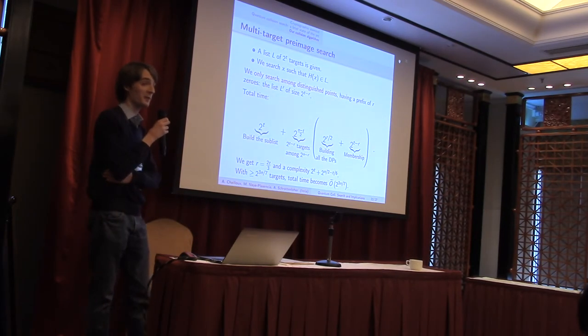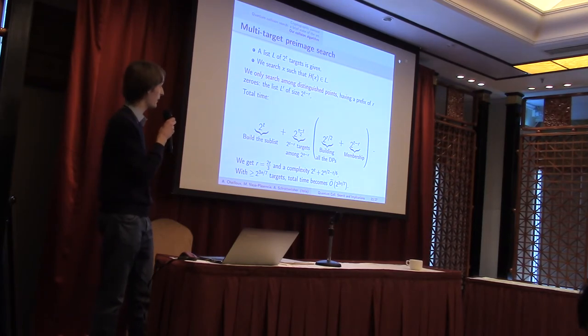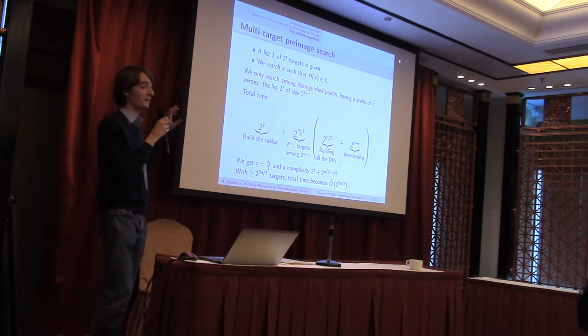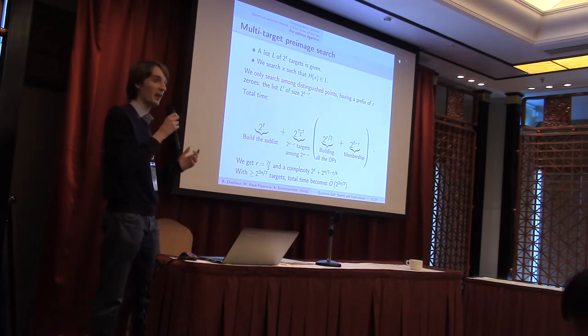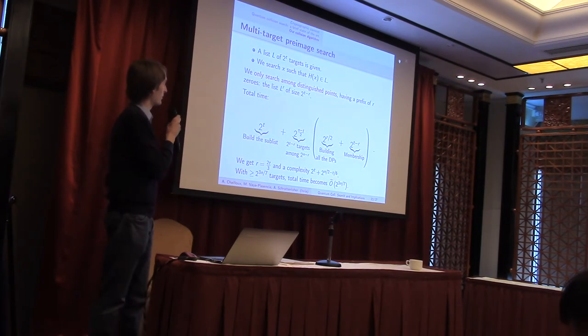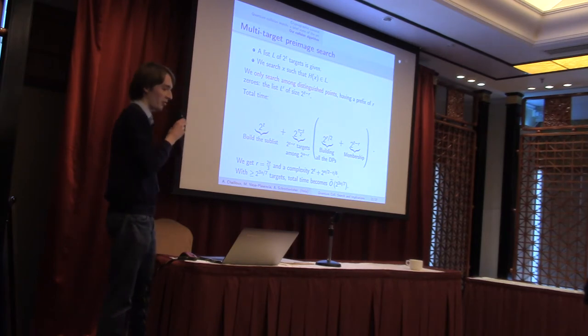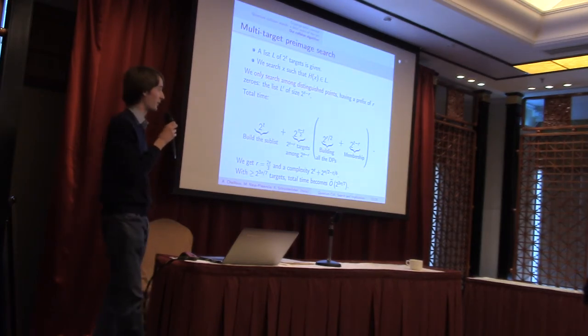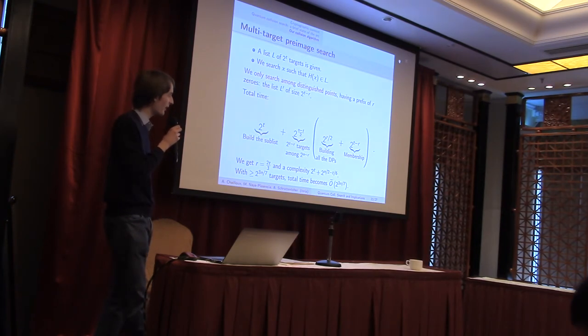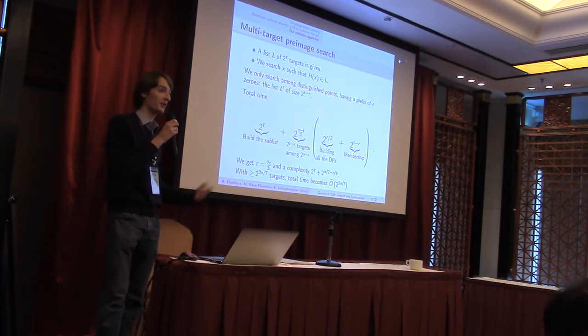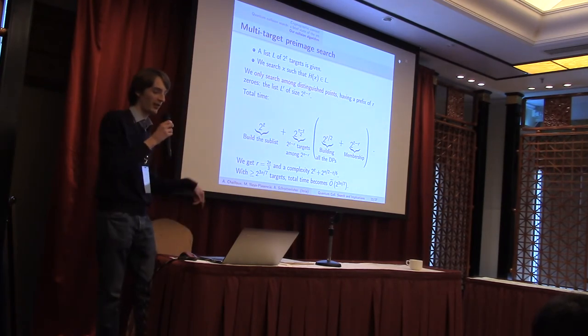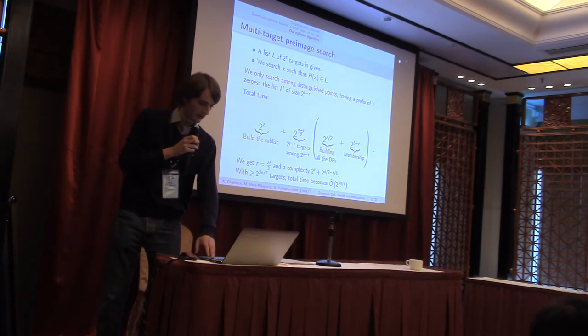Actually, the related problem of multi-target pre-image search can be attacked in the same way. Here we gave beforehand a list of targets, and we are looking for the pre-image of one of these targets. We look for some x such that h of x is in this list. So, what we need to do is only search among distinguished points with the same method. We take a list of size 2 to the t which goes through the whole list of targets to select the distinguished points. And then, we perform the same search operation as before. The lowest complexity achievable with this method, since we are counting these cells here, is 2 to the 3n over 7.